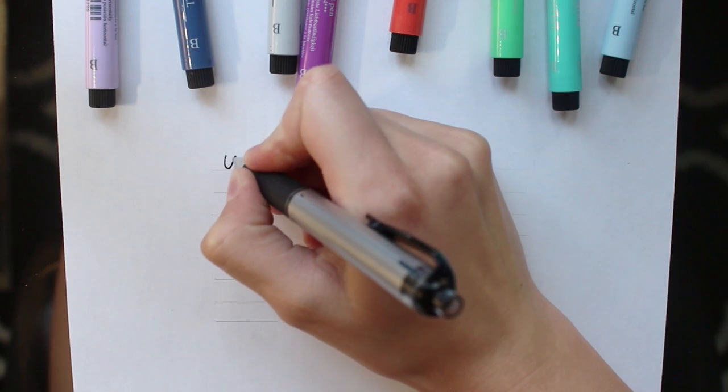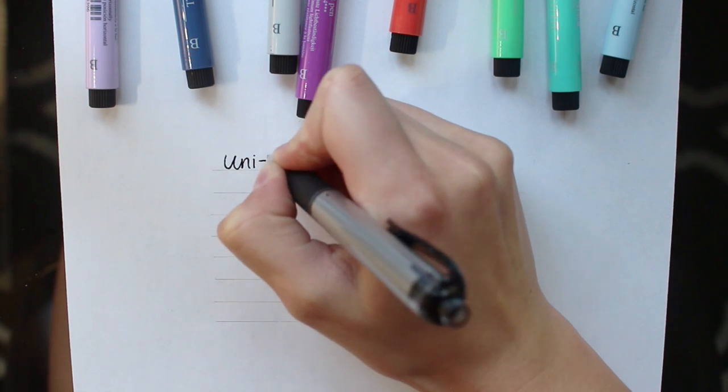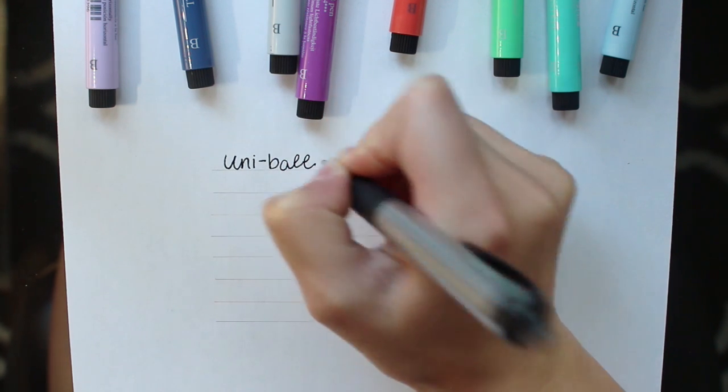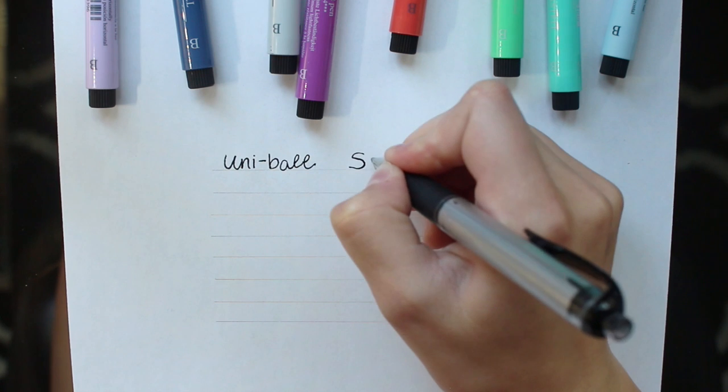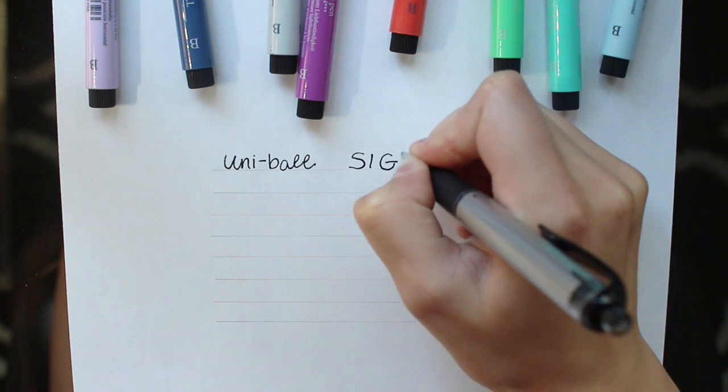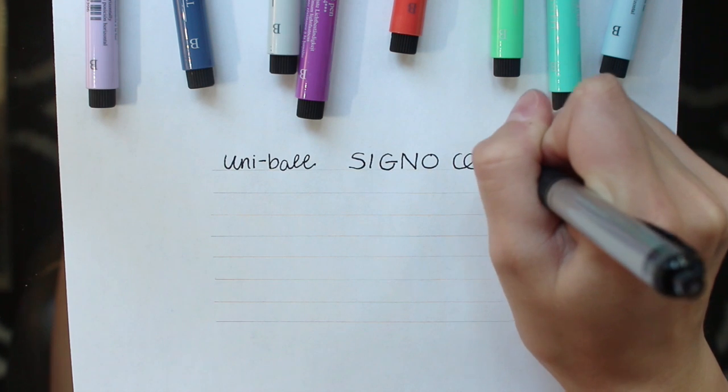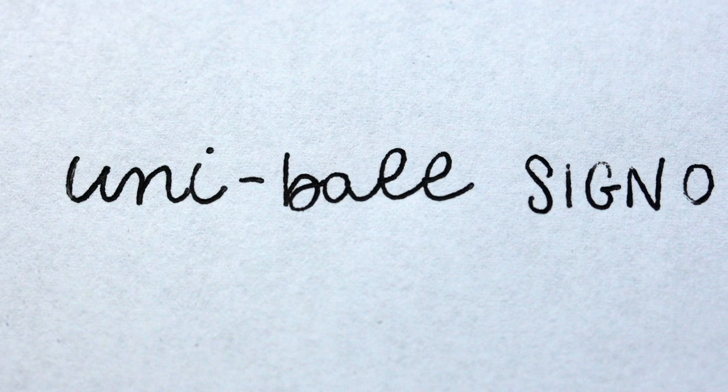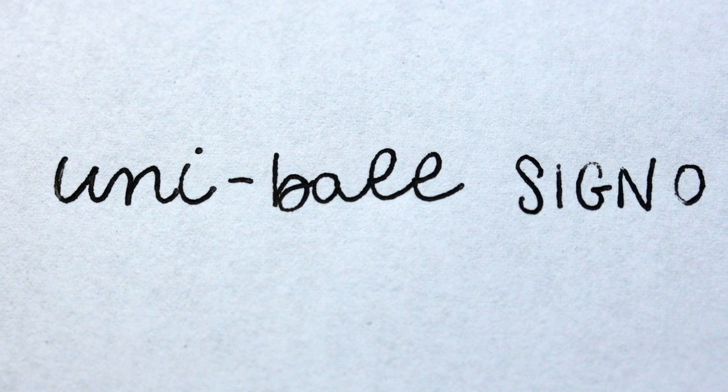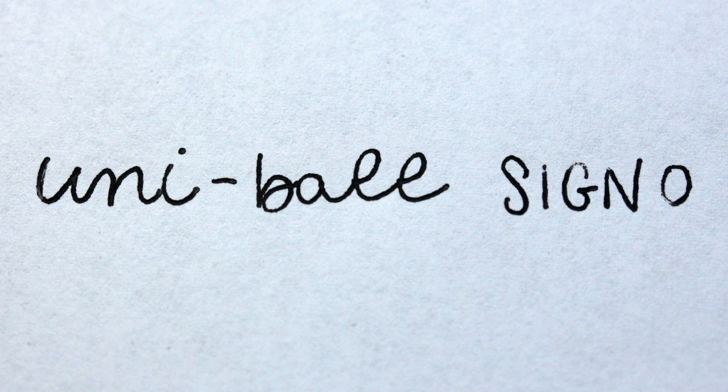So first we're gonna be starting out with the Uni-ball 207 by Signo. This has got to be one of my most holy grail pens. It's a gel retractable rollerball with a one millimeter tip. I would consider this a thicker line as far as drawing and journaling pens go. It works best on soft surfaces like a notebook or a journal, otherwise it can be pretty spotty.